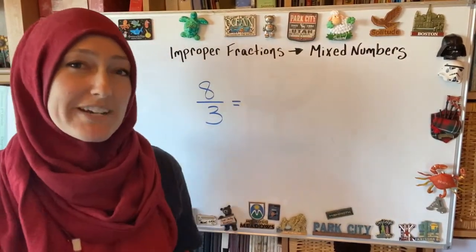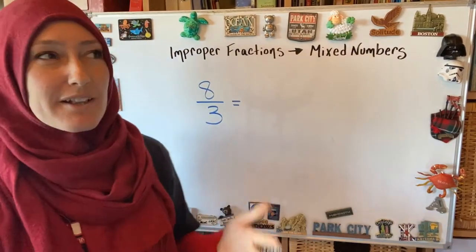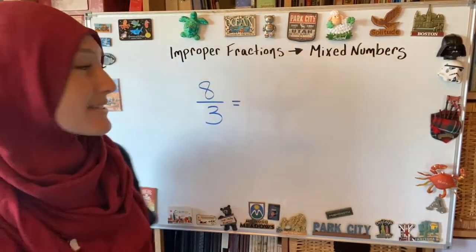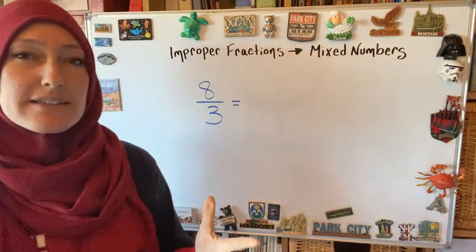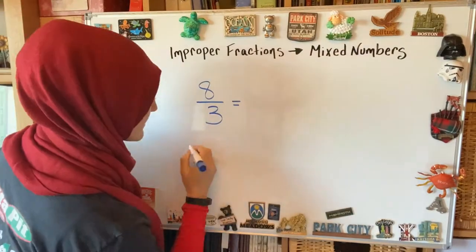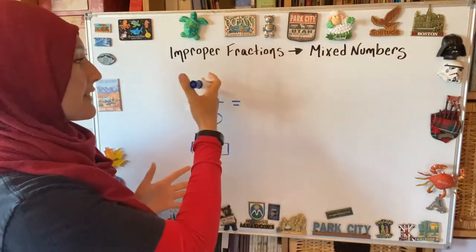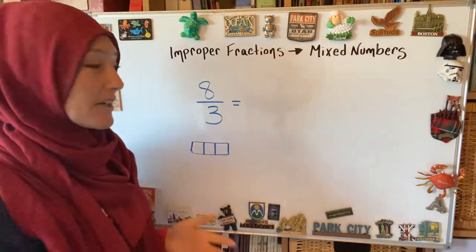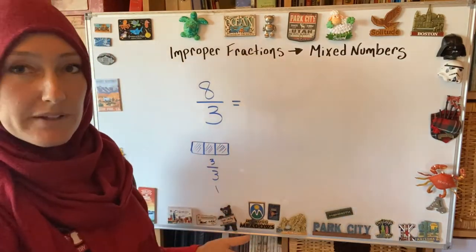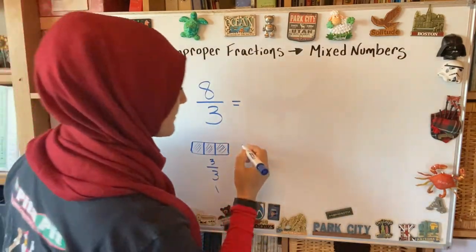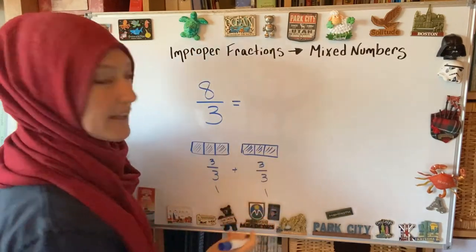We're going from improper fractions to mixed numbers. There's a long way and a shortcut — learn the long way first, then do the shortcut. What 8/3 is telling us is the denominator, 3, is the size of the part. If I model it, it's represented as a third-sized part, and the numerator tells us how many of those parts we have. Three-thirds makes one whole.